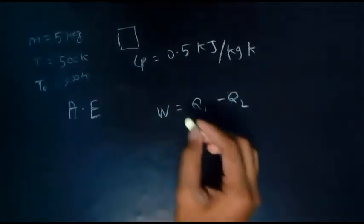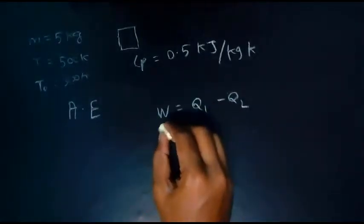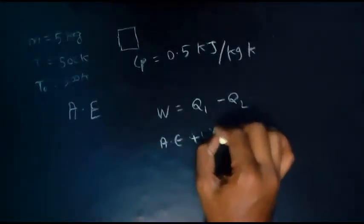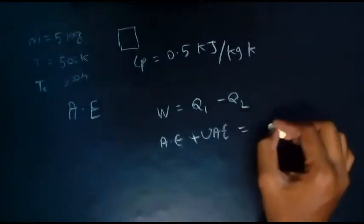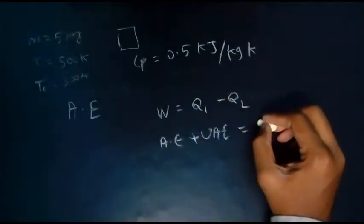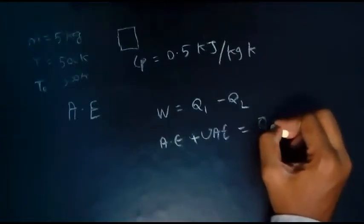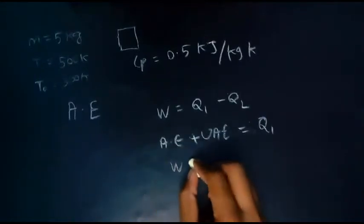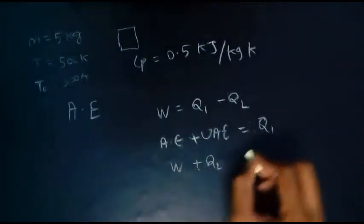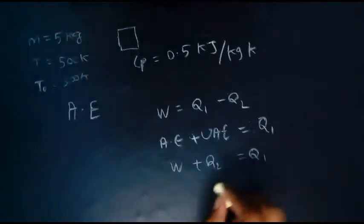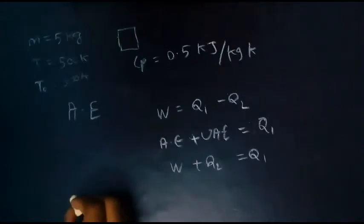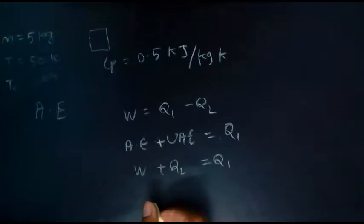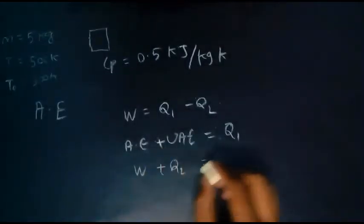Work is equal to Q1 minus Q2, what we are getting from the system. So work is the available energy and the heat lost is the unavailable energy that we have already discussed. Available energy is W plus Q2 is equal to Q1, so the available energy can be calculated.